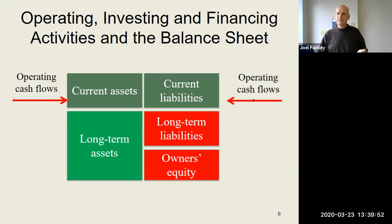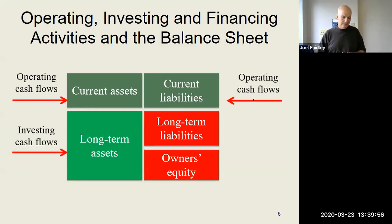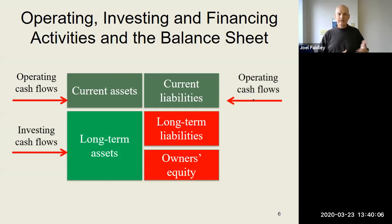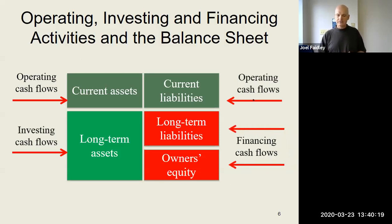What about light green? That's long-term assets — sounds like investments, and sure enough, it is investing cash flows. That leaves what's in red: the other half of your liabilities — your long-term liabilities. Remember chapter 14: bonds payable, notes payable. And then your equity: common stock, preferred stock, what's going on with retained earnings and dividends — all of that is your financing section. There are your three categories.